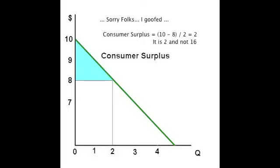Here's a more realistic graph. We look at our demand curve and at a price of eight, our consumer surplus is at a maximum price that consumers are willing to pay — ten dollars — minus eight dollars, times two, times half because it is a triangle. So consumer surplus here is sixteen.